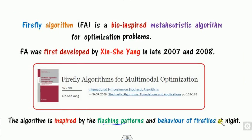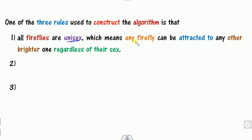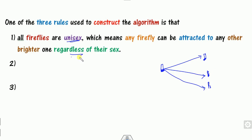The Firefly Algorithm is designed on three simple rules. The first rule is that all fireflies are unisex, meaning any firefly can be attracted to any other firefly regardless of their sex. So a firefly can be attracted toward this one or that one, depending upon their brightness.